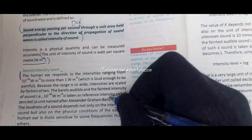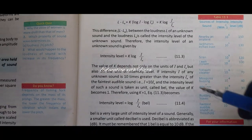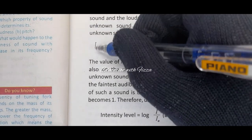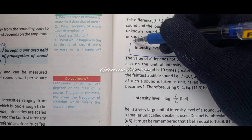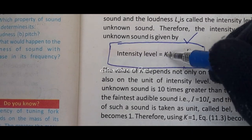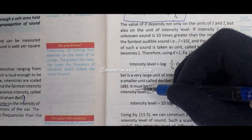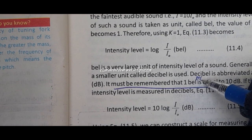If asked about sound intensity level, read the first paragraph of that section. You can write a short question answer from it. On the next page there is the formula: log(I / I₀). You should know this formula for MCQs and short questions. Also know the relation and the units — bel and decibel.